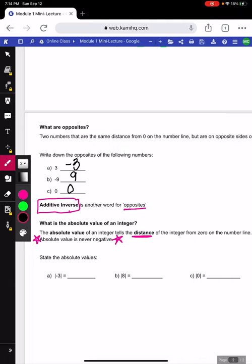So the first one, the absolute value of negative 3. Negative 3 would be 3 spaces from 0 on the number line. So our answer would be 3. The absolute value of 8 would be 8. It stays the same because absolute value of 8 means it's 8 spaces from 0. So it is 8. And our last one, the absolute value of 0 would just be 0. Because 0 is 0 spots from 0 on the number line.